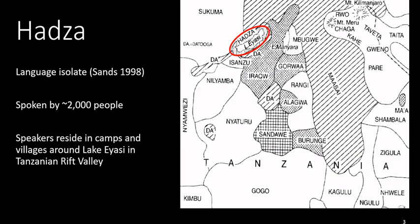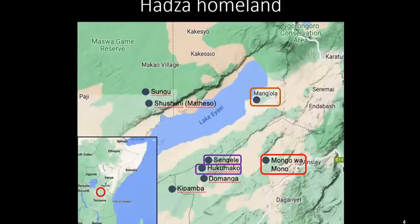The Hatsa people have traditionally practiced a hunter-gatherer subsistence lifestyle, and many today still participate in foraging activities. The Hatsa speakers today reside in numerous camps and villages in the region around Lake Eyasi. This map, borrowed from Andrew Harvey, shows some of the communities where large numbers of Hatsa reside. For this study, I worked with speakers from the communities marked in the boxes — Mangola in orange, Monguamono in red, and Sengede and Hukumako in purple.